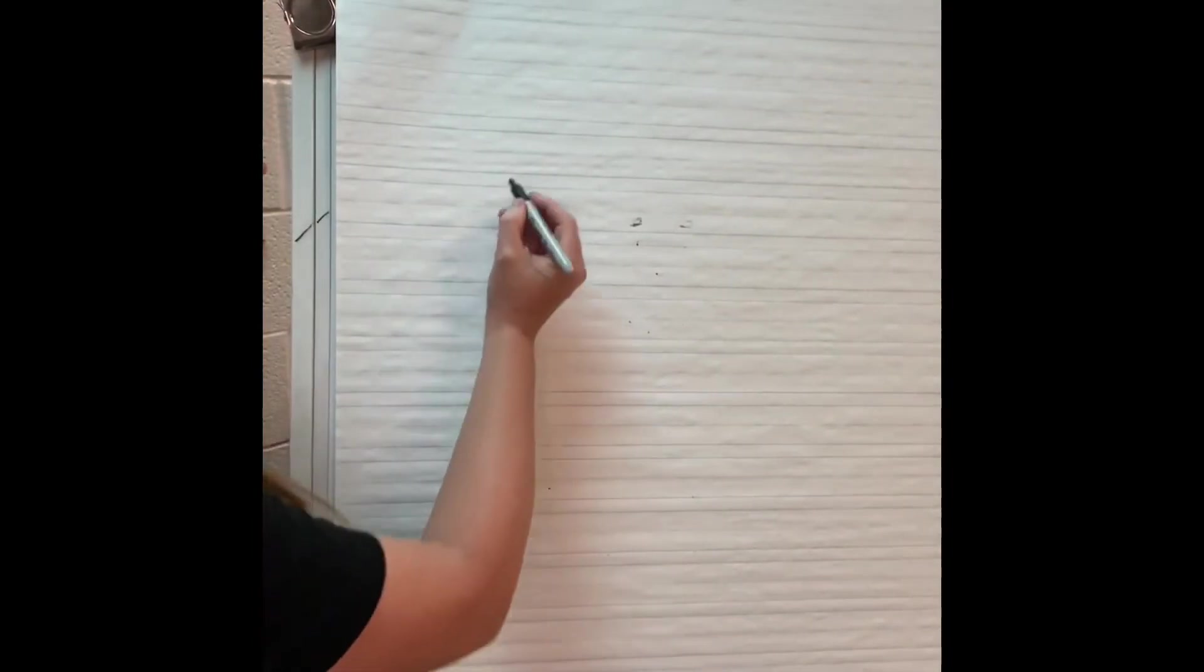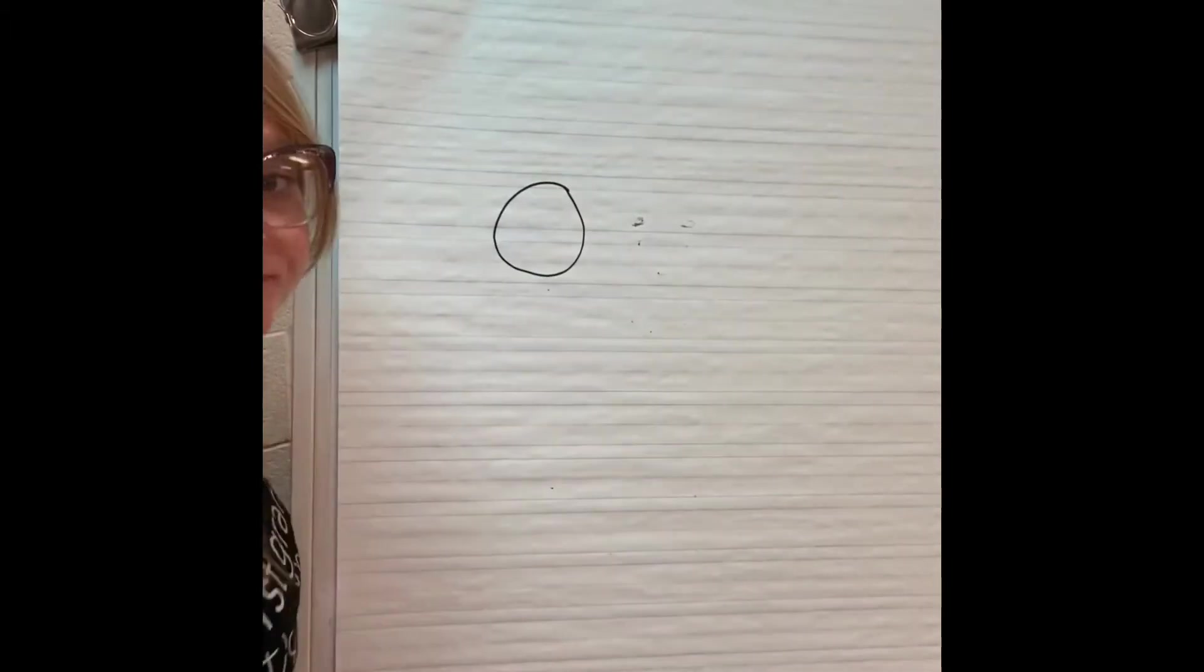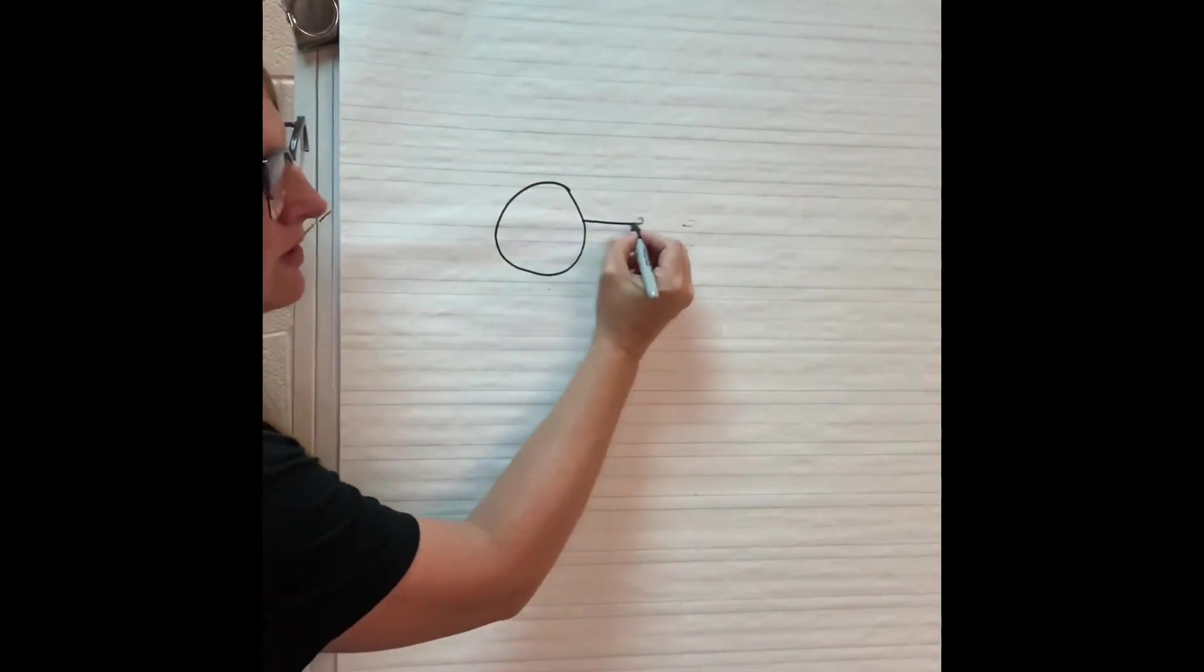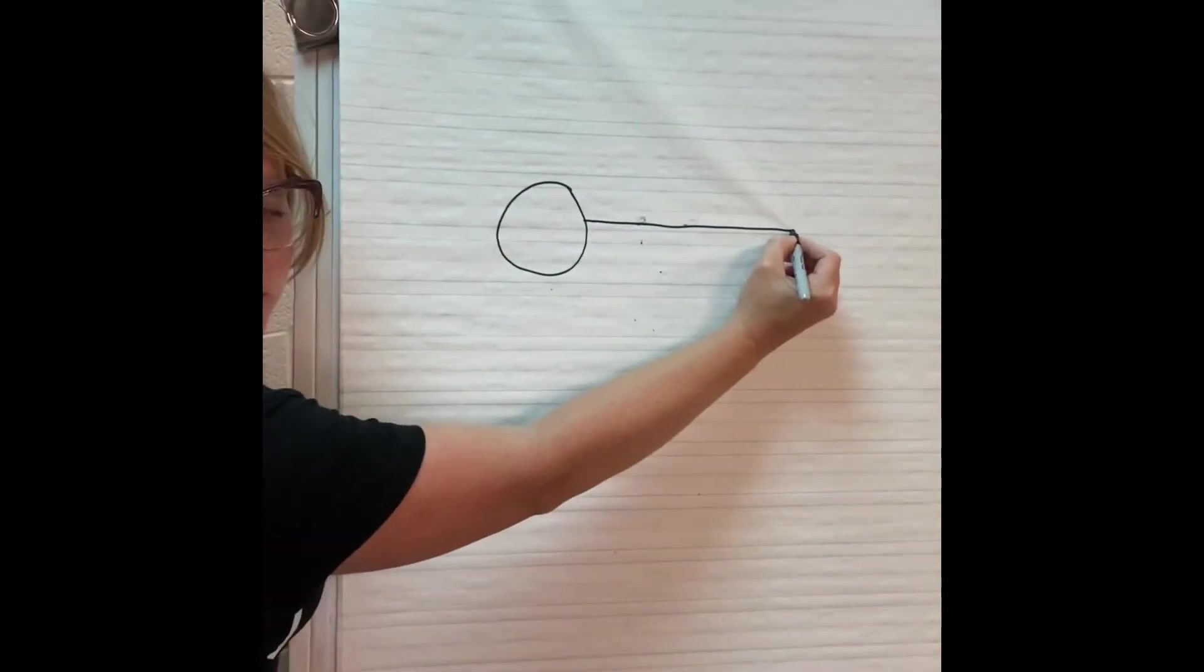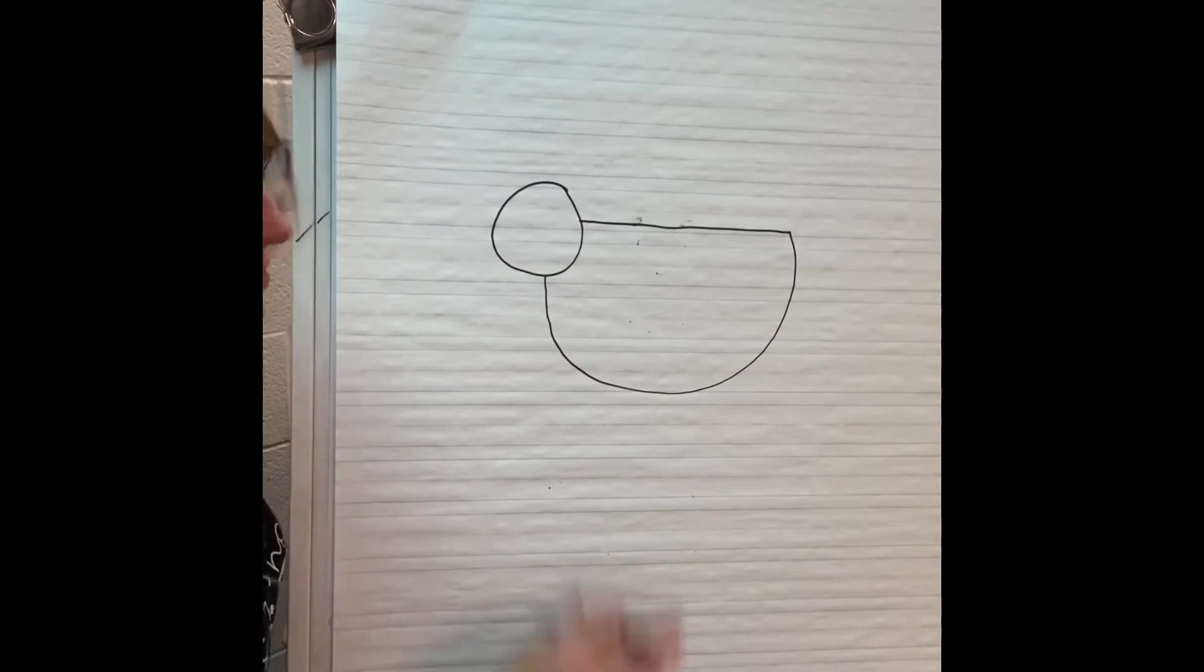Okay, we're going to start with a circle not in the middle of your paper but on the side and then from there in the middle of the circle we're going to go out and then around and up. So the circle and then a half circle underneath it.